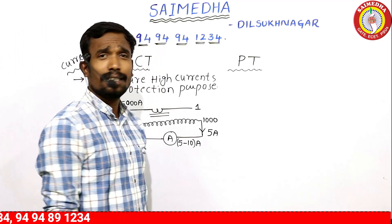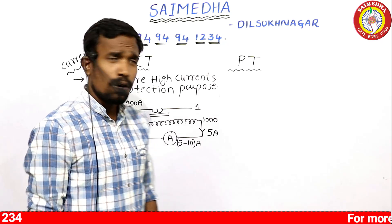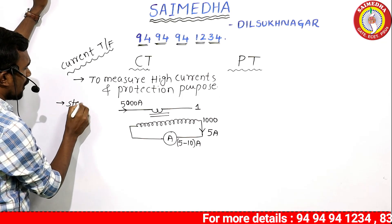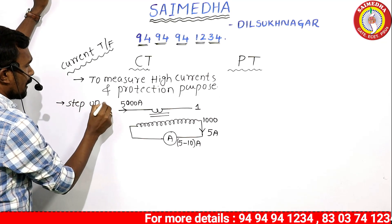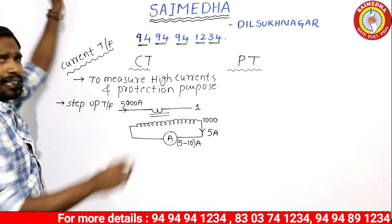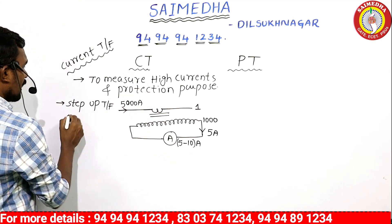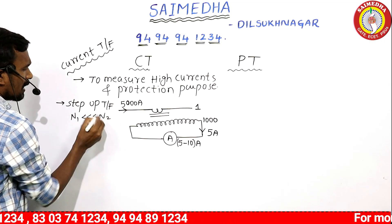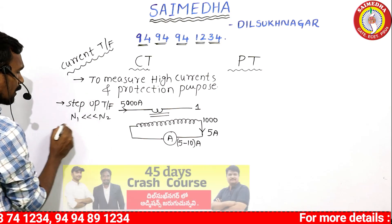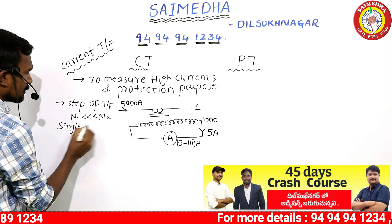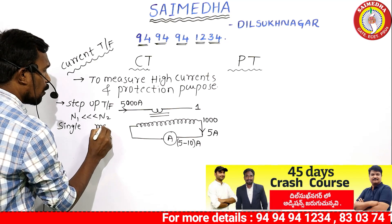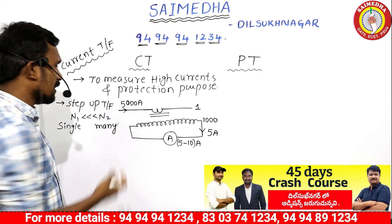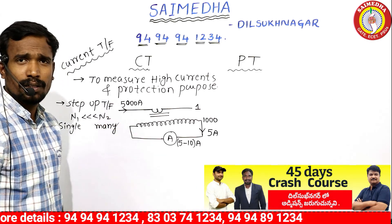This current transformer is a step-up transformer — not a step-down transformer. It is a step-up transformer in terms of voltage. It has more number of turns on the secondary (N2) compared to primary turns (N1).